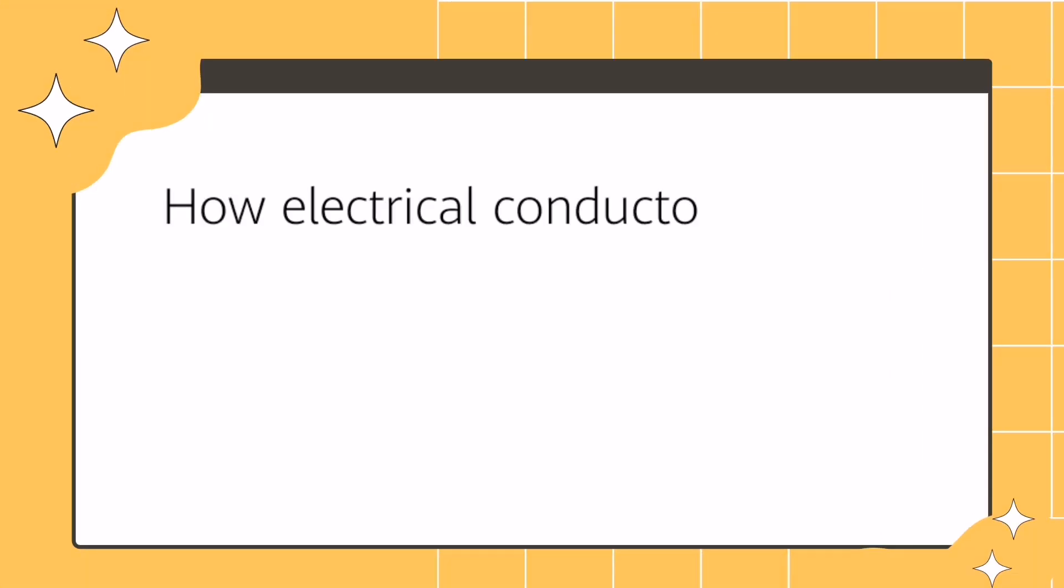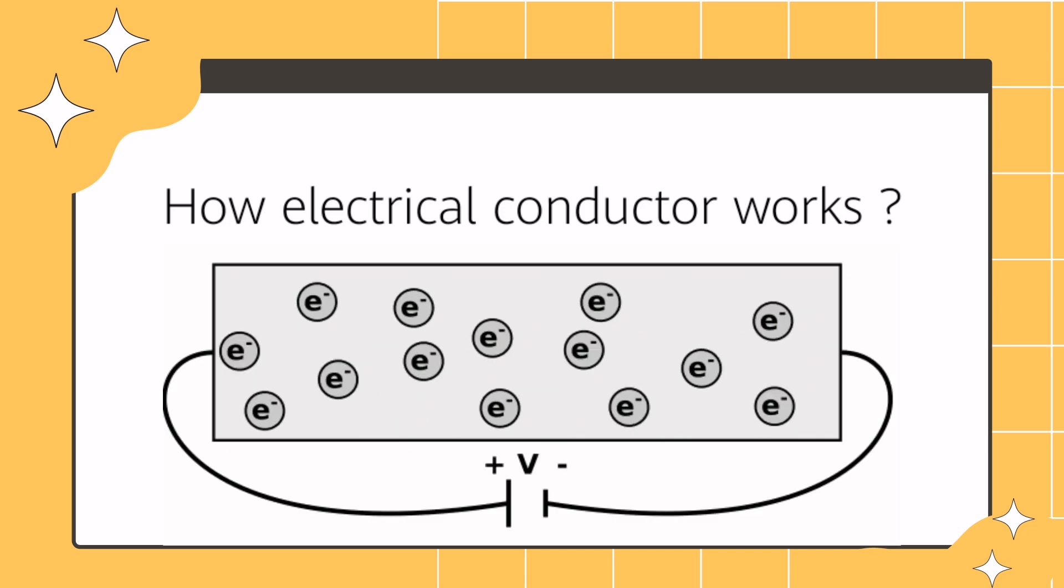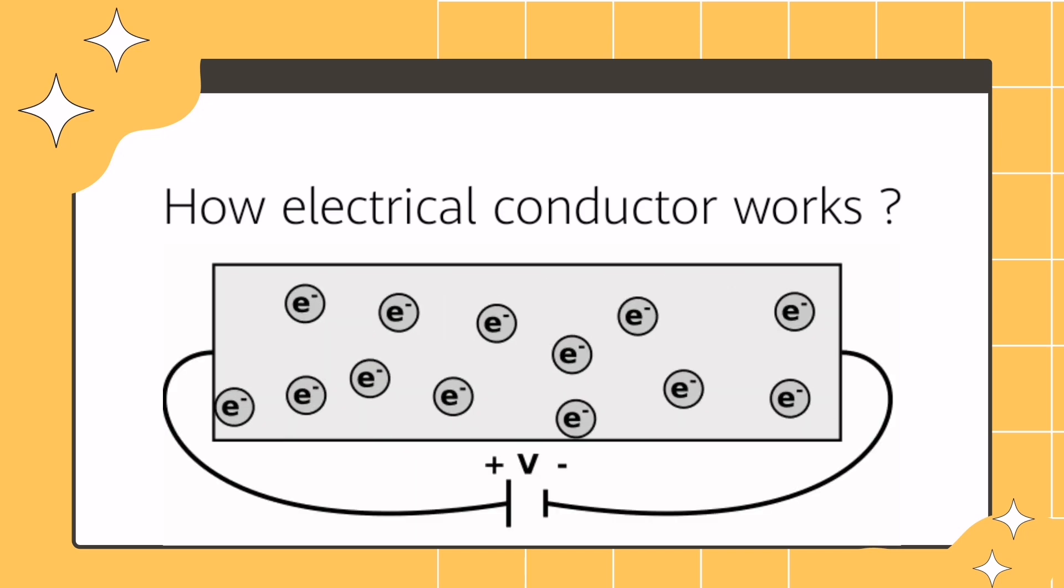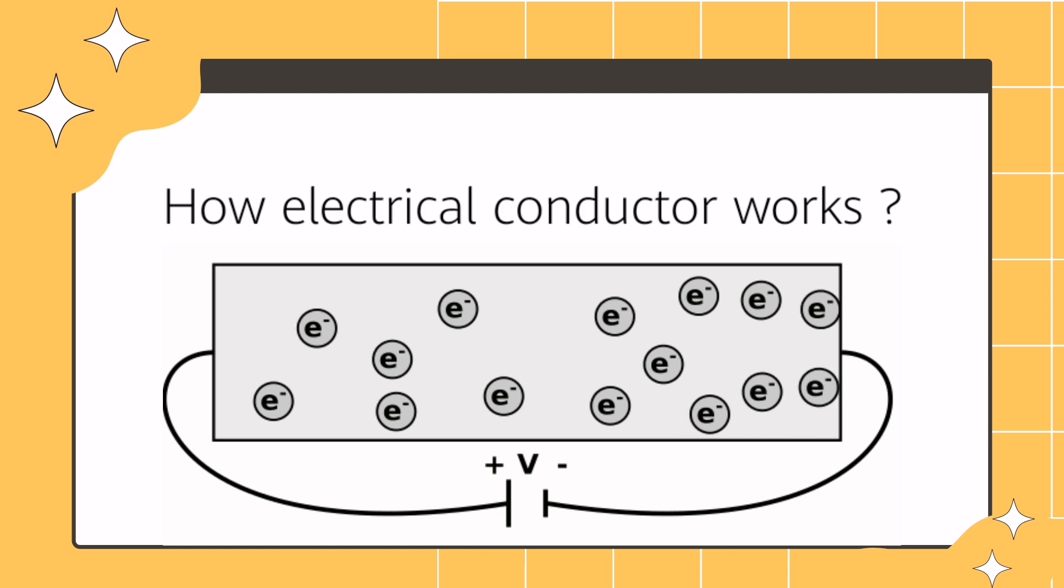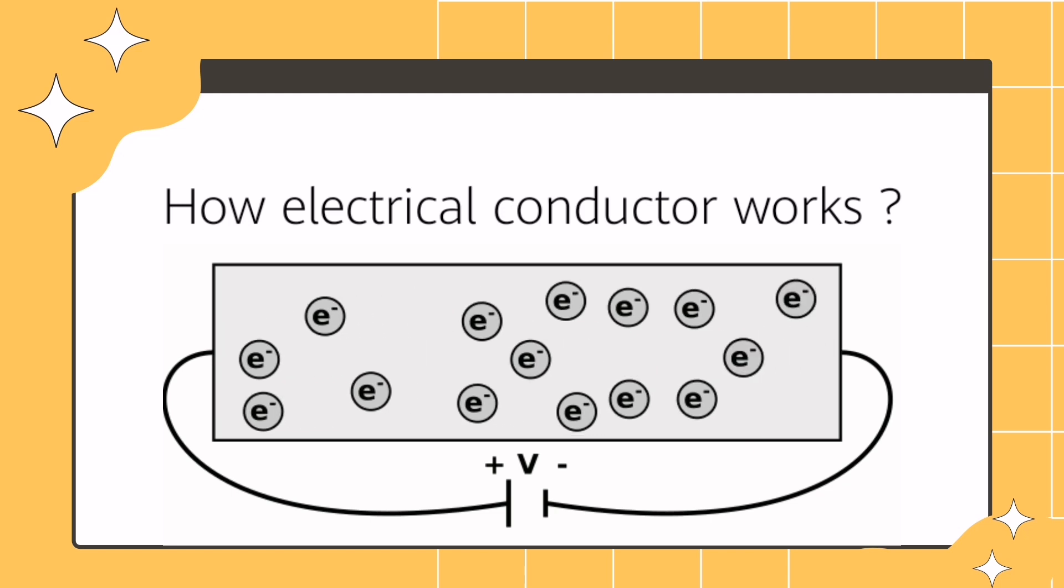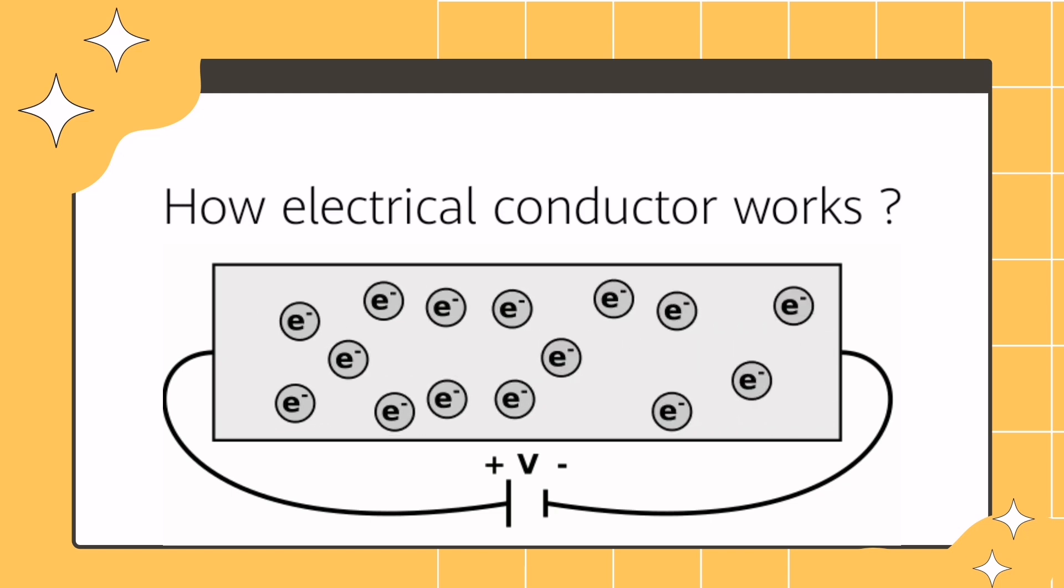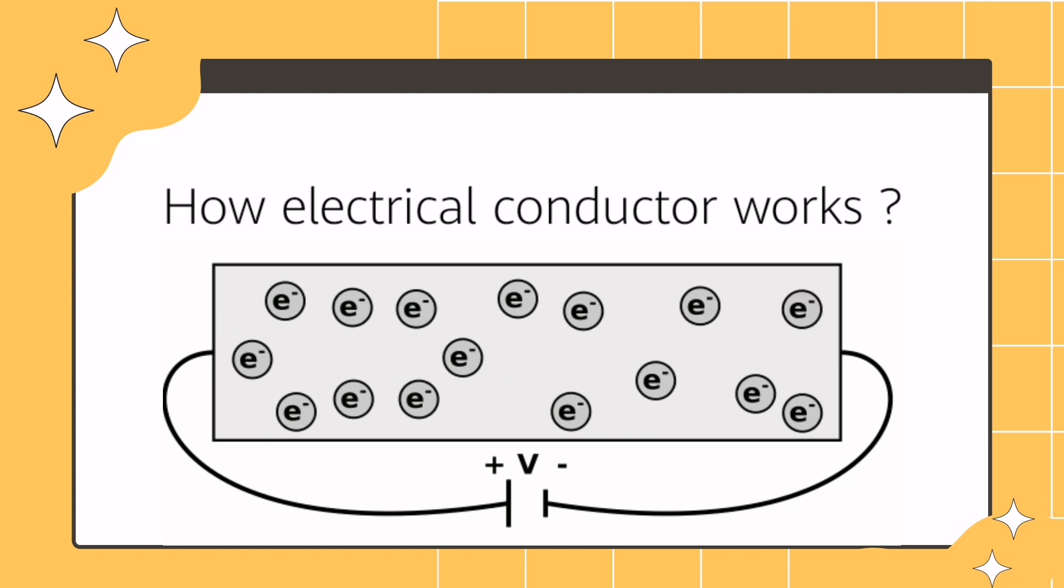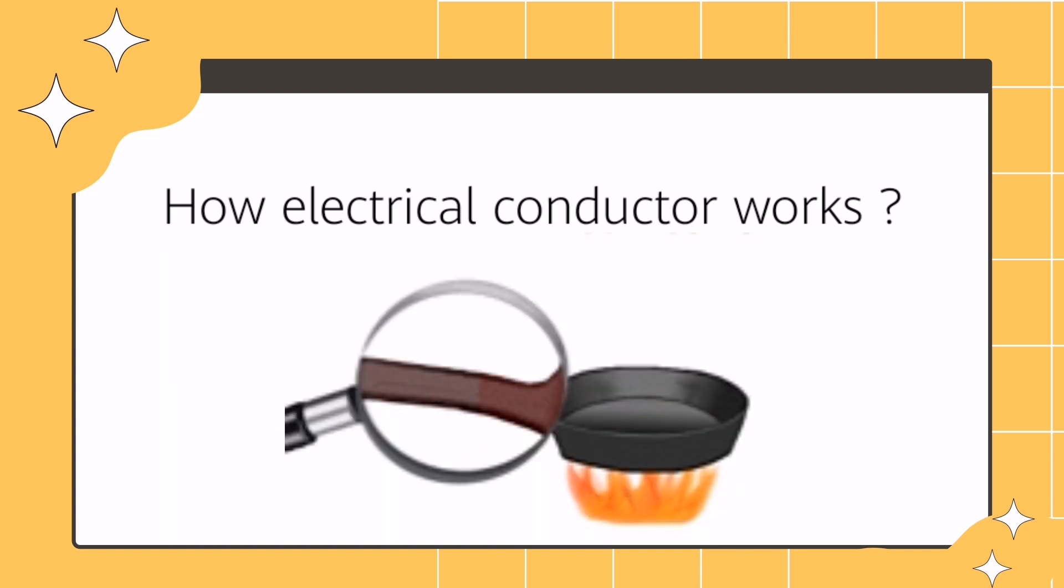How electrical conductors work: The conductor works by electrical charges. Usually, electrons move easily from atom to atom with the application of voltage. In general, its capacity to transmit, such as heat.